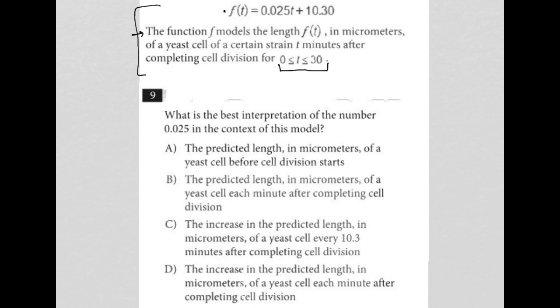Question nine asks, what is the best interpretation of the number 0.025 in the context of this model? I'm going to point this out to you. This shows up quite often on the SAT. So f(t) equals 0.025t plus 10.3. Let's notice 10.30, same thing.